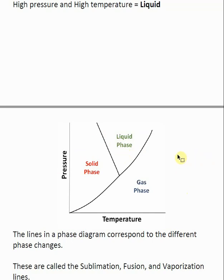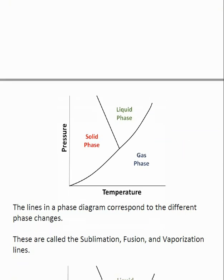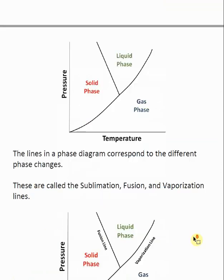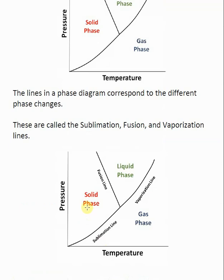The lines in this phase diagram correspond to the conversion of one phase into another. As we cross a line, we convert from one phase to another. There are three lines, each with a specific name corresponding to the type of phase change: the sublimation line (solid to gas), the fusion line (solid to liquid), and the vaporization line (liquid to gas).